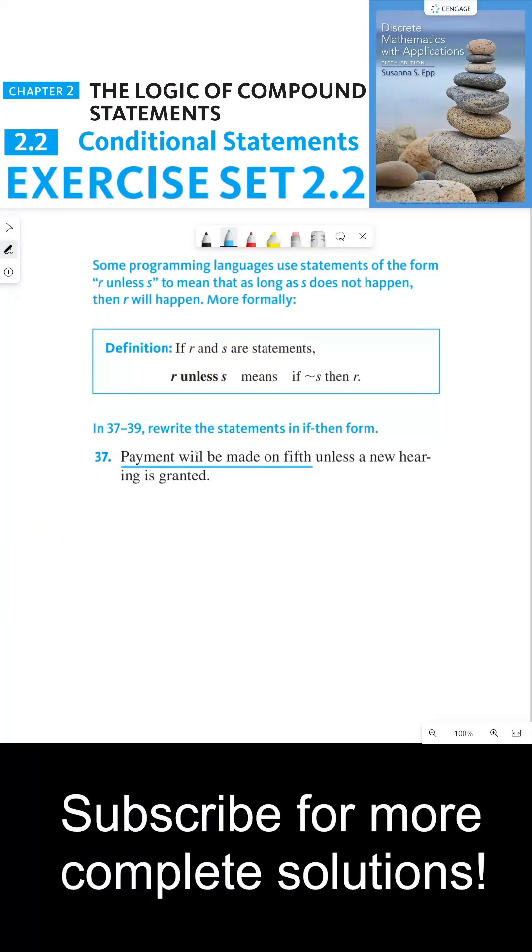So in this case, we'll say payment will be made on fifth is my R, and then we have unless a new hearing is granted will be my S.